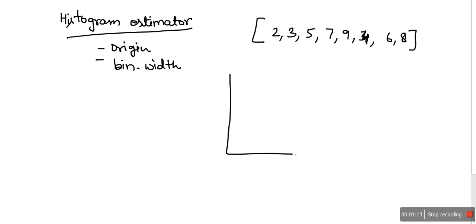We are going to plot this dataset. These are the scales, so let's say 0, 5, 10, 15, 20. We will assume origin 0, so we are going to start from 0. This value can be anything. And bin width, let's consider 5.